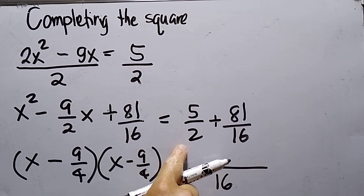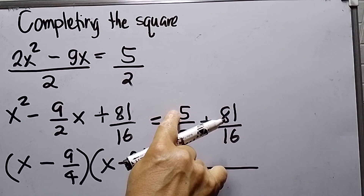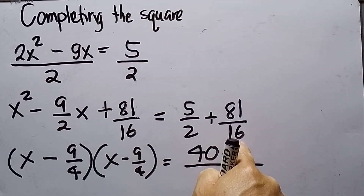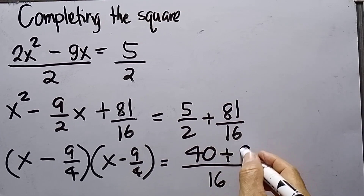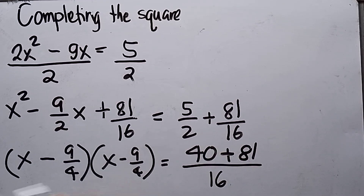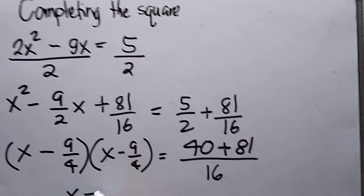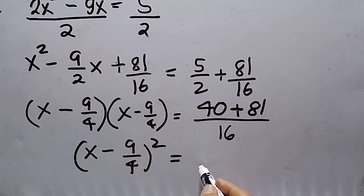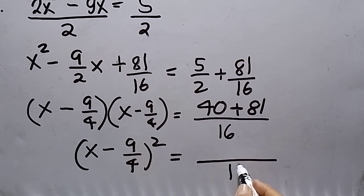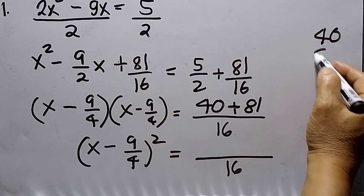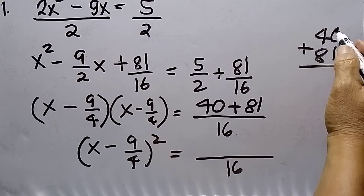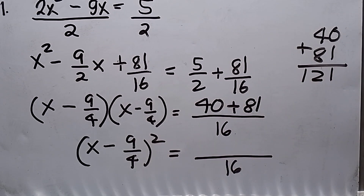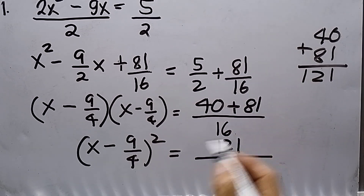The LCD between 16 and 2 is 16. So 16 divided by 2 is 8, times 5, that is 40. Plus 16 divided by 16 is 1, times 81, so that will be 81. Then I write this as x minus 9 over 4 squared equals 40 plus 81 over 16. 4 plus 8 is 12, so I have 121 over 16.